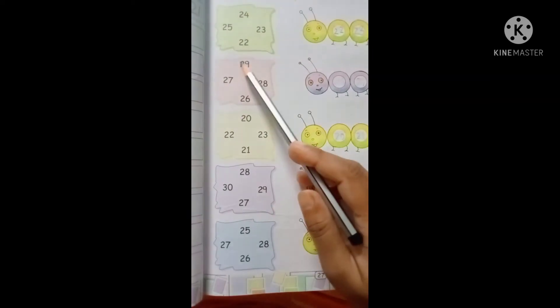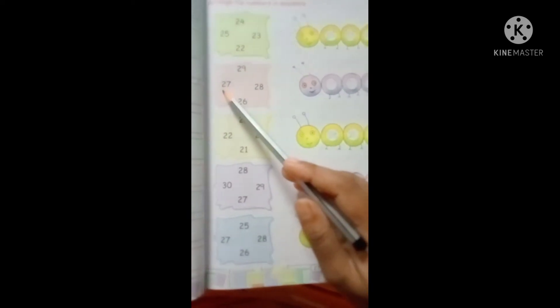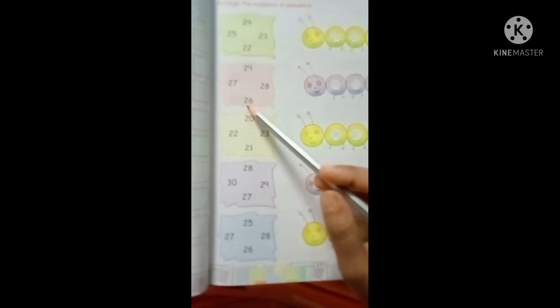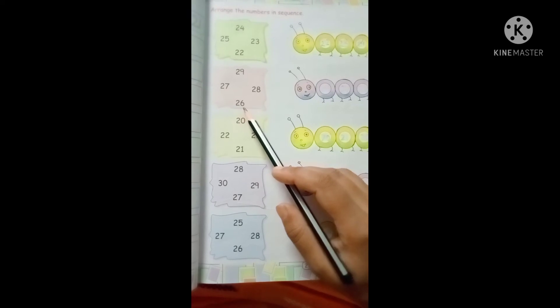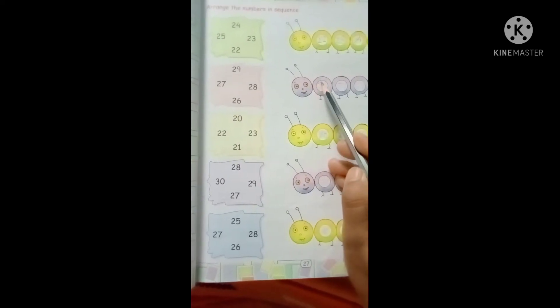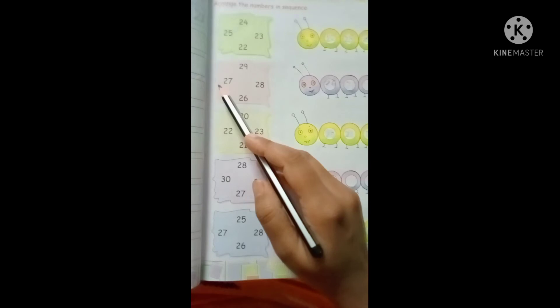In this second box there are four numbers again: 29, 27, 28, 26. So which go first? 26. After that comes 27, 27 comes 28, last one 29.